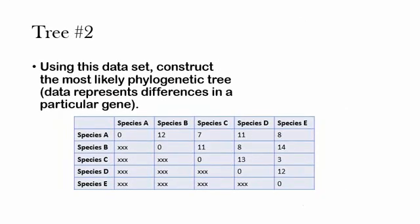For our next problem we'll also be using this data set to construct the most likely phylogenetic tree, but with this question the data actually represents differences in a particular gene. So rather than with a percent similarity where the higher number means they're closely related, in this case a lower number means that they're closely related because that means there's been less time for the gene to mutate and become slightly different.